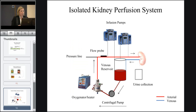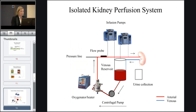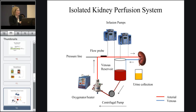This is a schematic diagram of the system. As I mentioned, it's based on paediatric cardiopulmonary bypass technology, and we perfuse the kidneys with a blood-based solution. The blood is put in the venous reservoir, pumped through a centrifugal pump into a membrane oxygenator and heater — where we add oxygen and warm it up to normal temperature. It then enters the arterial arm of the circuit and into the kidney via the renal artery. It is allowed to drain out through the renal vein, back into the reservoir, and continually recirculated.